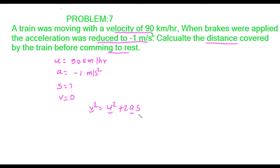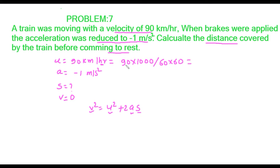The initial velocity is given in kilometers per hour, but we need it in meters per second. So in this problem, 90 km per hour must be converted. We multiply by 1000 and divide by one hour, which is 60 into 60 seconds. When we solve this, we get the value of 25 meters per second.